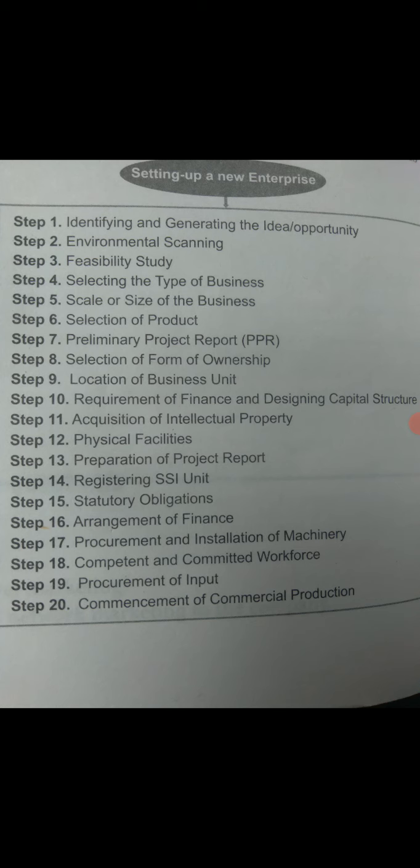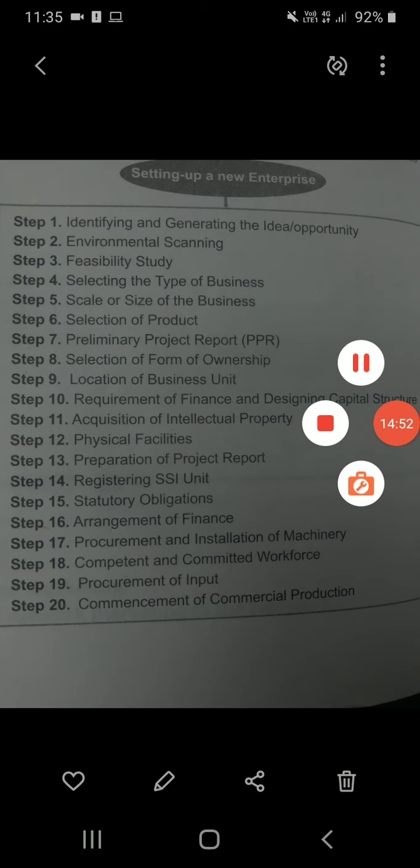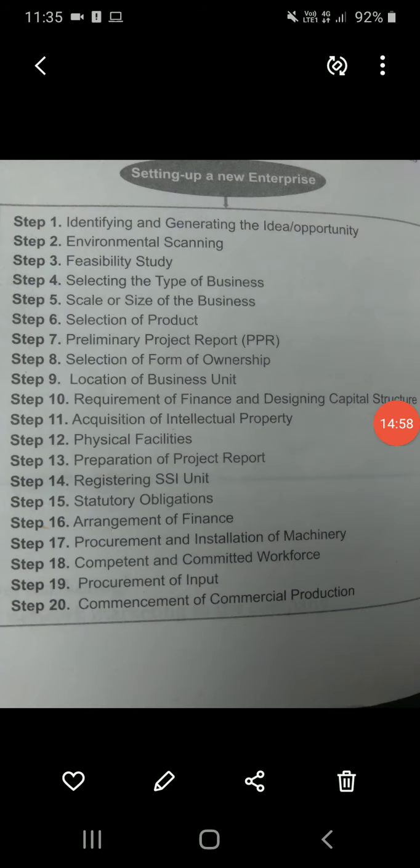The nineteenth step is procurement of input — procuring the raw material so that the production process can begin. The twentieth and last step is commencement of commercial production. Before starting commercial production, it is advisable for the entrepreneur to first conduct a test run. Only if the test run is successful should commercial production begin, so that the venture can become a successful enterprise. These are the 20 steps an entrepreneur must follow before starting a business. Thank you.